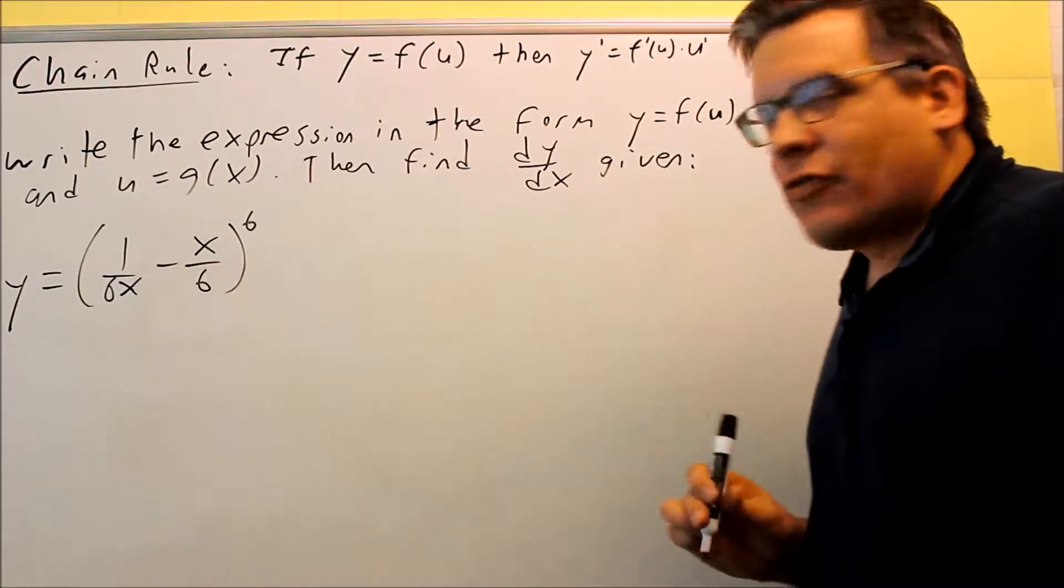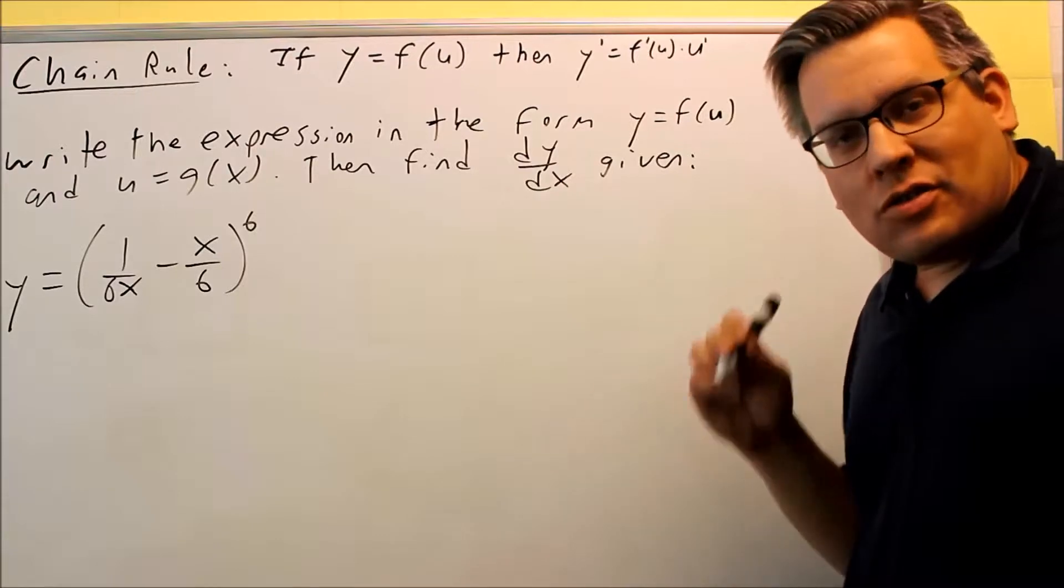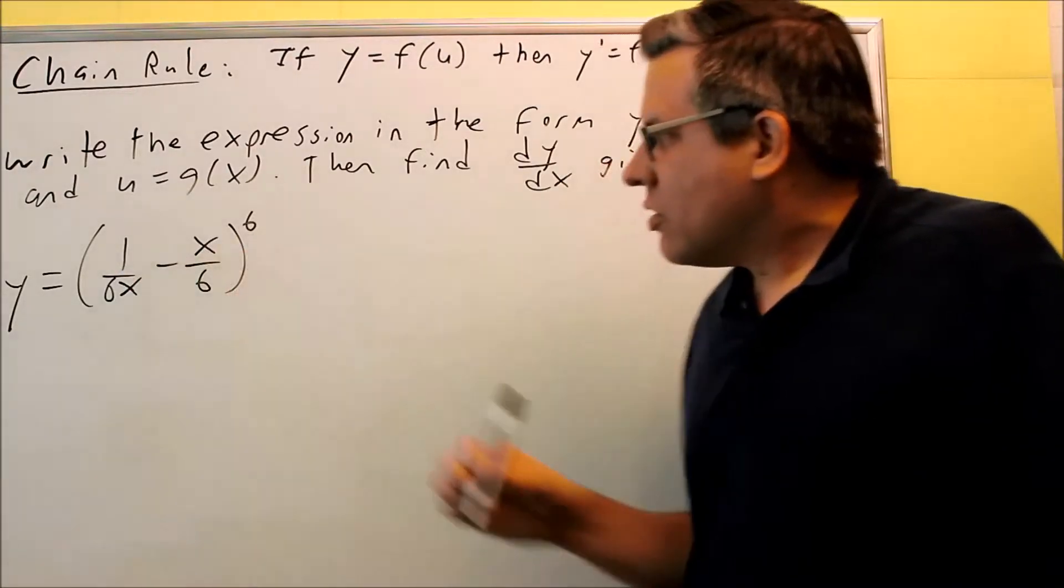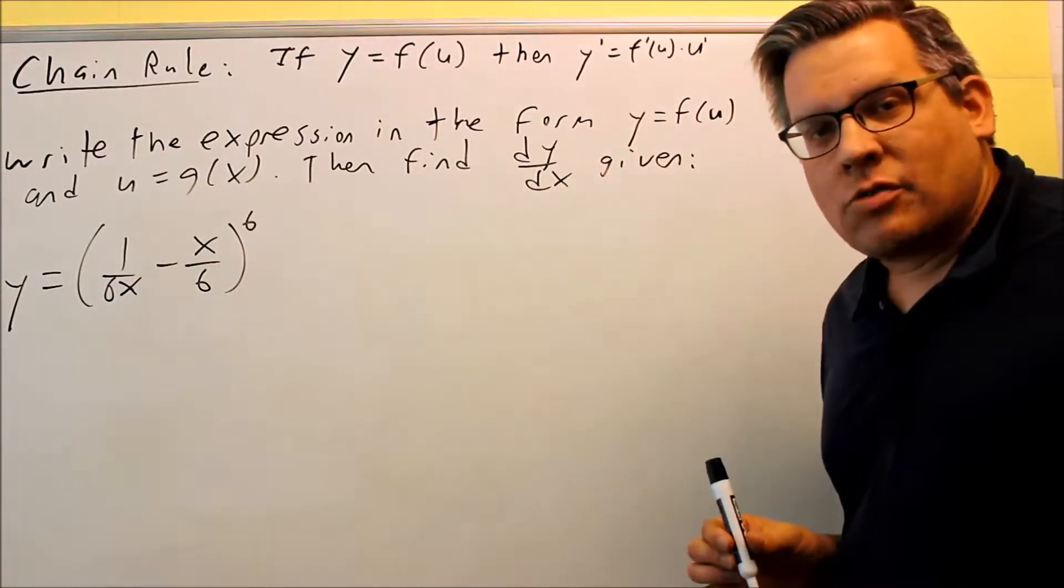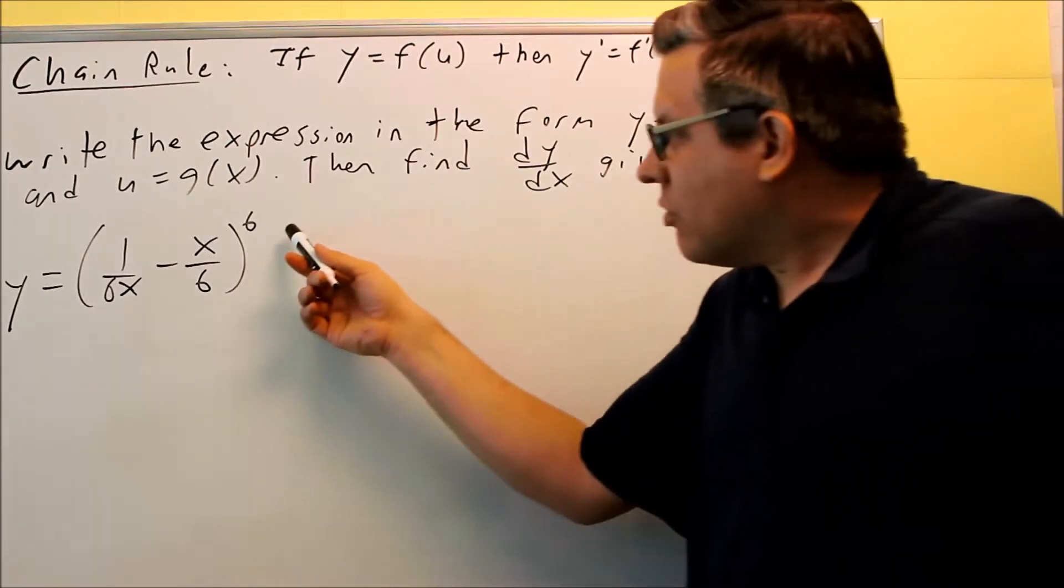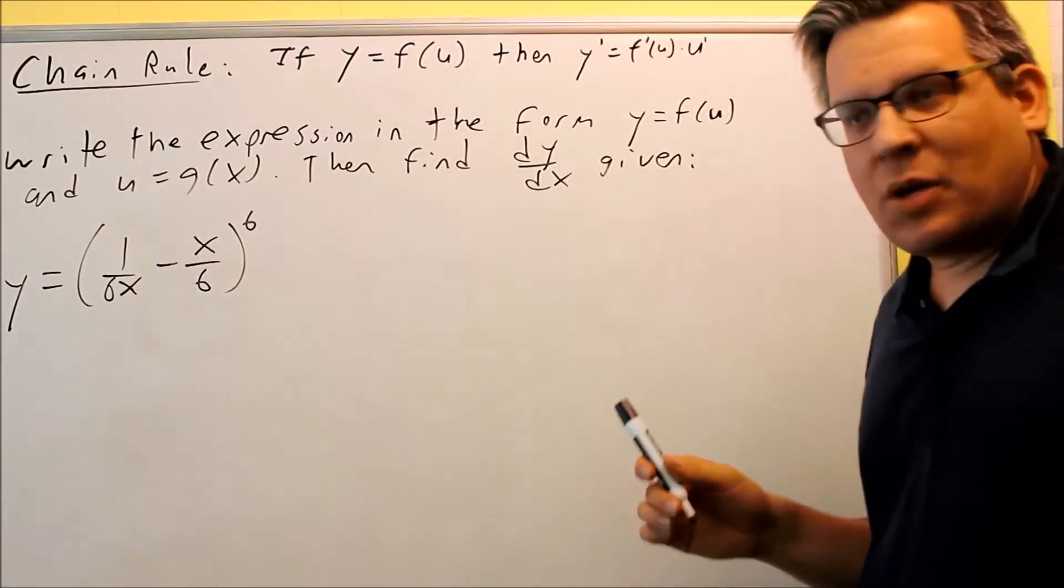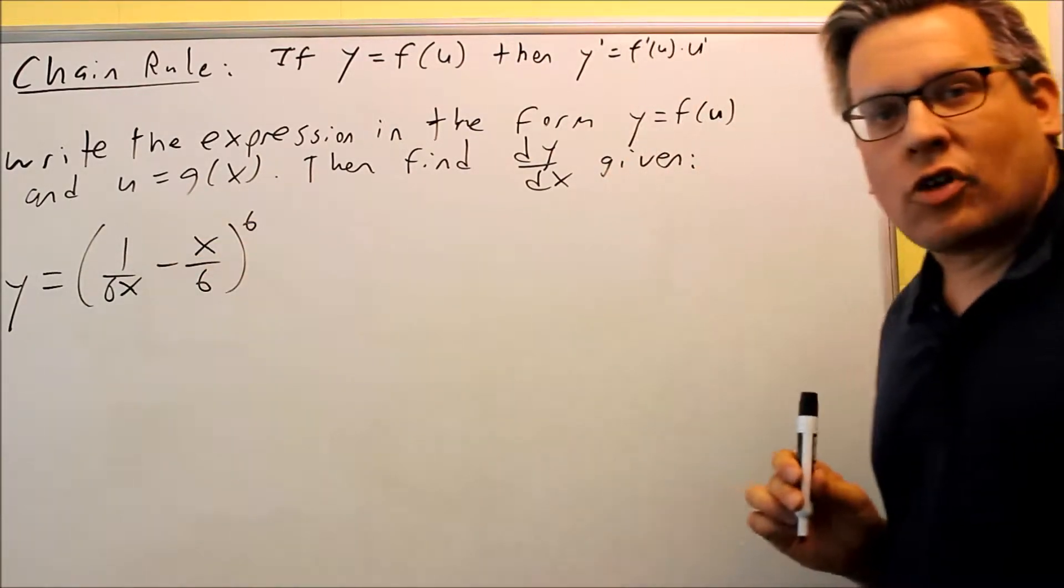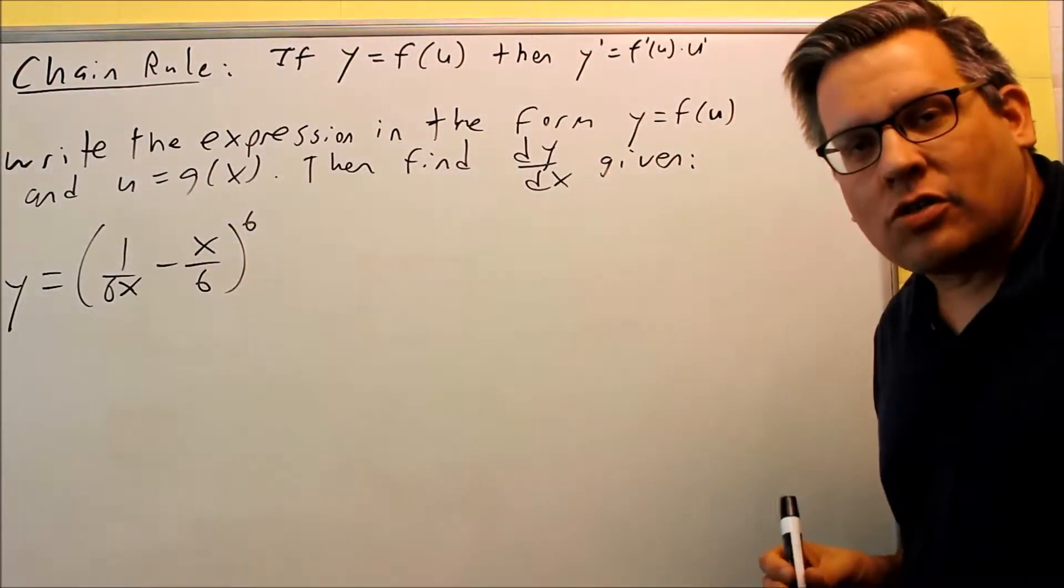Now, looking at this, the first instinct you might have would be to get common denominators and put it together as a single fraction. Yes, you could do that, but what's going to happen is you're going to have to do derivative of the outside, but then when you do the derivative of the inside, that's going to involve a quotient rule, and it's going to be more complicated to do it that way.